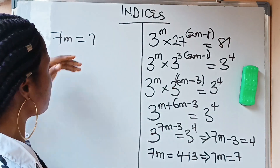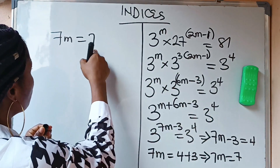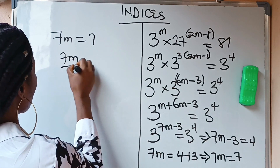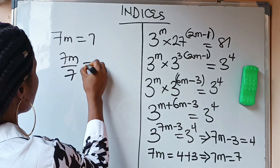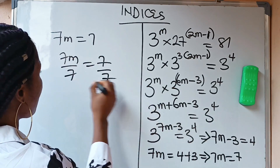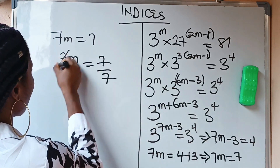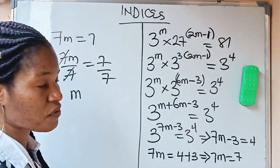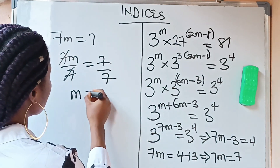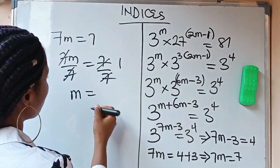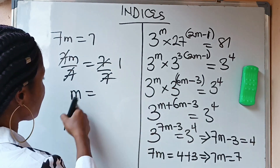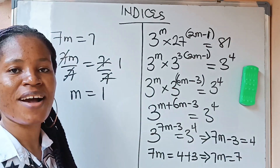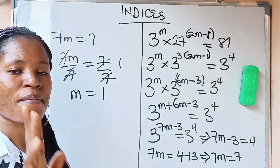So we have 7m equal to 7. Dividing both sides by 7: 7m over 7 equals 7 over 7. The 7s cancel and we are left with m equals 1. Do have a lovely day — bye!